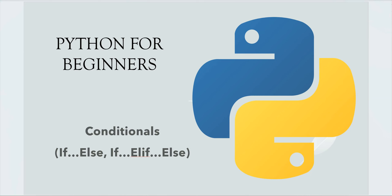Conditionals help us to understand and define the code flow, in which we can take decisions about which lines of code need to be executed when certain conditions are met. It is usually based on the outcome of the conditions, which could be either true or false.